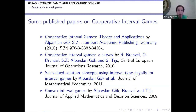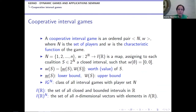Now, the definition of cooperative interval games. Similar to the classical case, we have an ordered pair (N, W). N is the set of players. W is the characteristic function, but this time it assigns to each coalition a closed and bounded — that is, compact — real interval. We define the value of the empty set as the degenerate interval [0,0]. A degenerate interval is one where the lower bound and upper bound are equal. W underline S denotes the lower bound and W overline S denotes the upper bound. The family of interval games is denoted IGN.